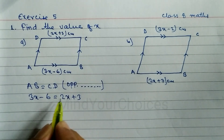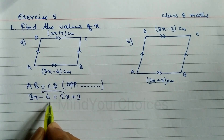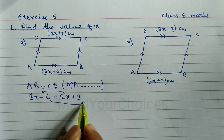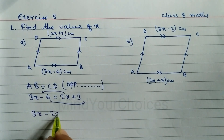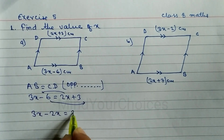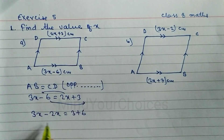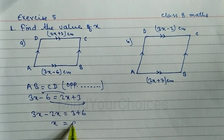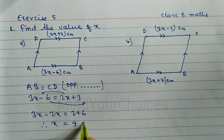First we have to arrange: bring 2x to the left side and 6 to the right side. So we write 3x minus 2x is equal to 3 plus 6. When we subtract we get x is equal to 9. Therefore the value of x is equal to 9.